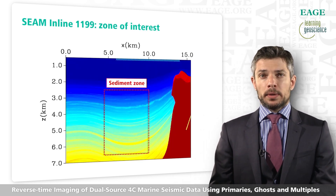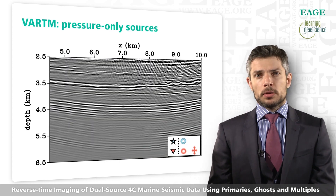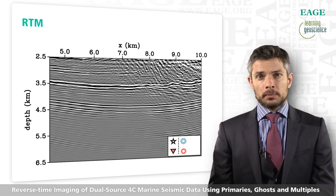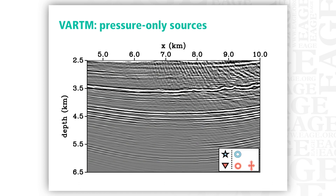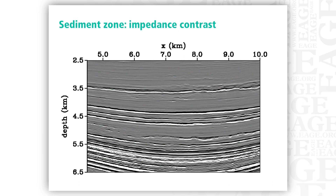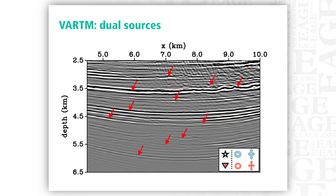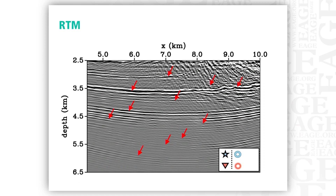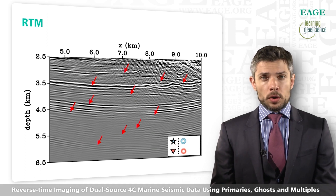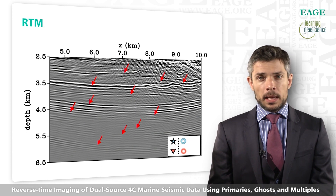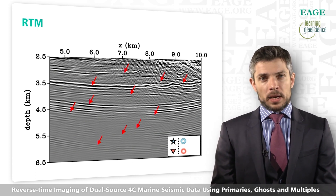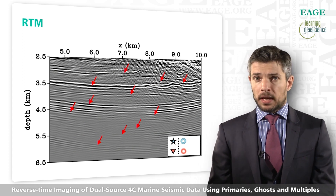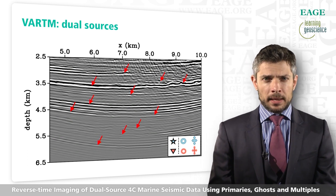In the sediment zone, we perform the same exercise. Going through RTM, then receiver-only vector acoustic, then source-and-receiver vector acoustic — the improvement is similar to the salt flank case. In the upper right corner, some artifacts are more prominent in standard RTM; while they also exist in vector acoustic RTM, their amplitude is toned down by the directivity effects of the vector data. The vector data acts to reduce these artifacts by accounting for finite-frequency directivity.